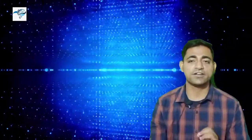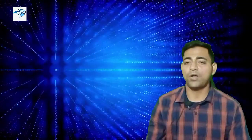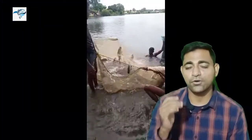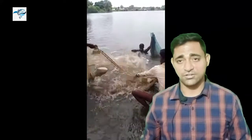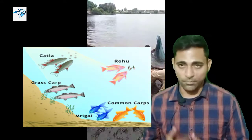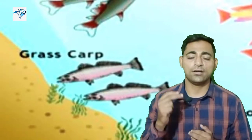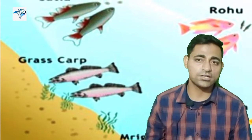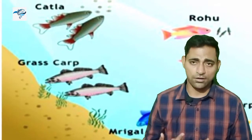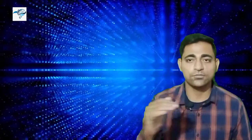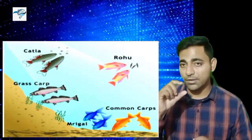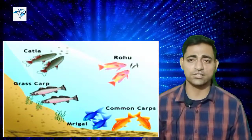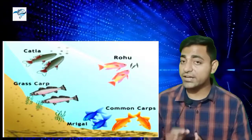In polyculture you need to maintain a proper ratio of fishes at different levels. In IMC culture there are three levels: surface feeders, column feeders, and bottom feeders. You must segregate fishes according to the level of water where they prefer to feed. Surface feeders include katla, silver carp, and bighead carp, as they take feed from the surface. Column feeders, meaning fish that feed from the middle portion of the pond, include grass carp and mainly rohu.